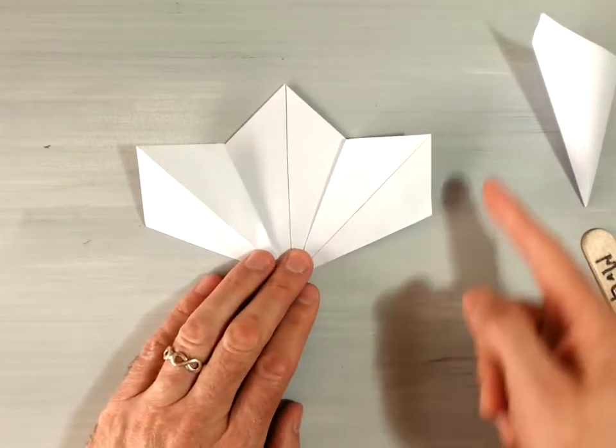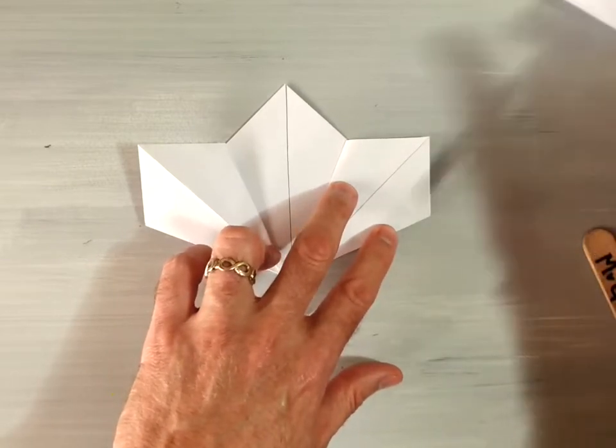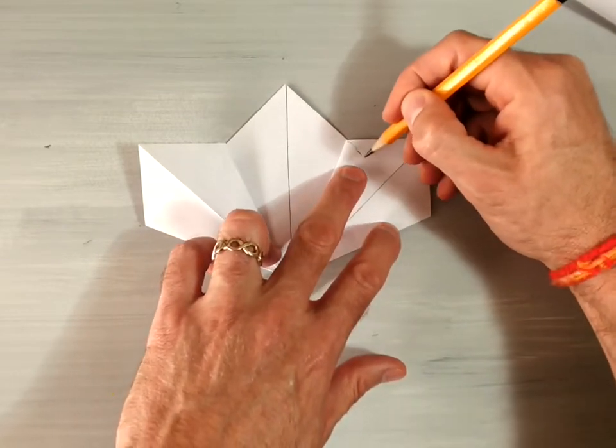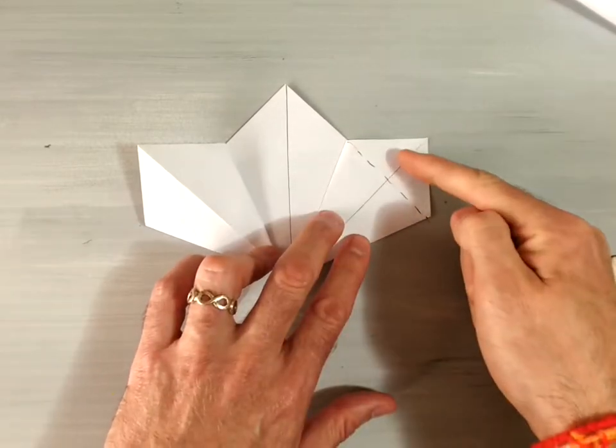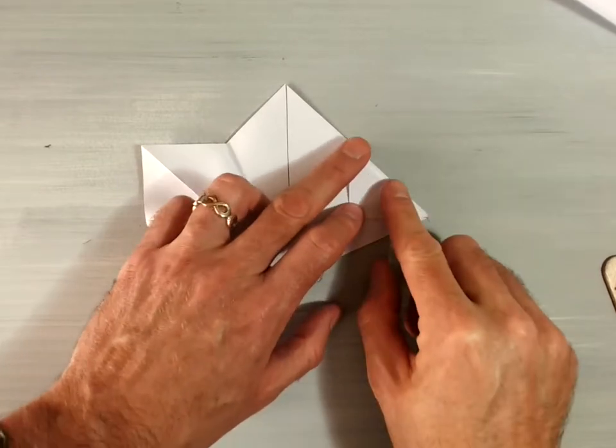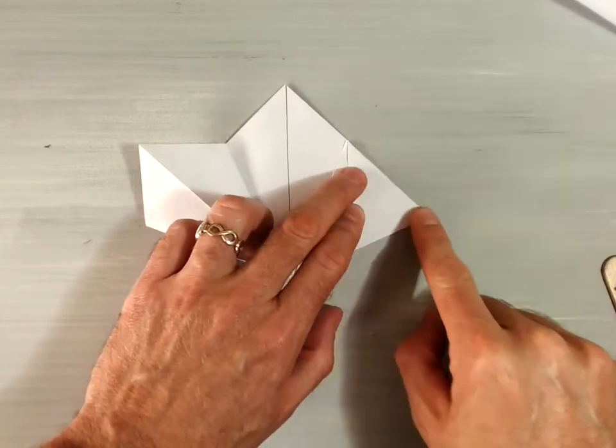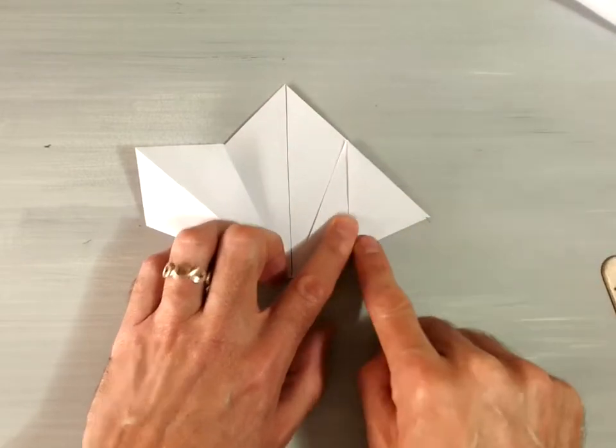Now you're going to take this flap here that's above this line and you're actually going to fold right along that line so that this triangle is folded down. The fold should line right up with this to kind of create the vision of this straight diagonal line.